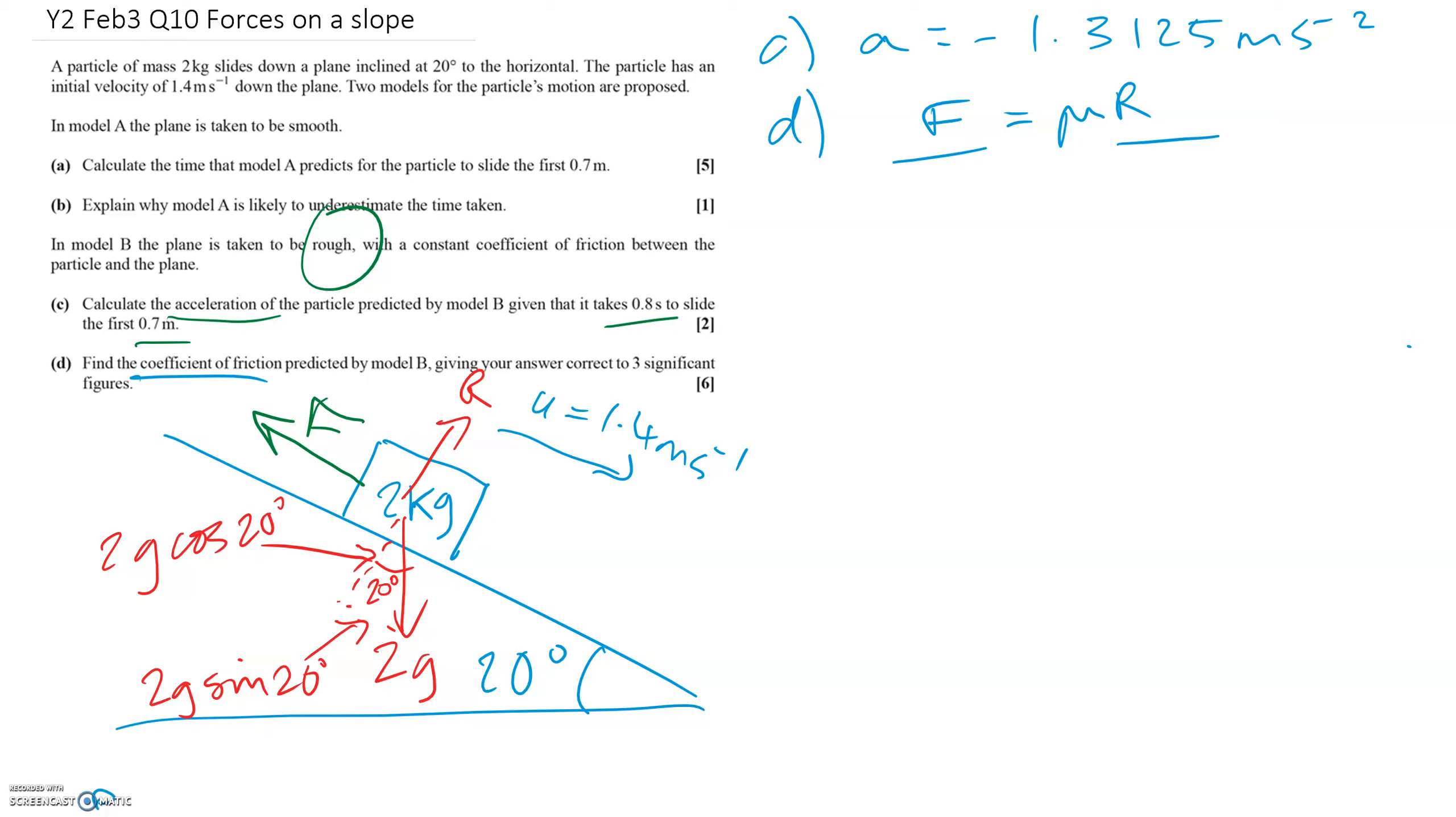So let's find F first. If we resolve down the slope, we do resultant force equals ma. So if we resolve in this direction, all the forces going down the slope, 2g sin 20. We've also got the frictional force now in the opposite direction. And that will equal the mass times by the acceleration we got in part C minus 1.3125. So rearranging that, getting F on its own, I'll get F equals 9.32859. And probably best to keep that exact on your calculator because we're going to need it later on when we use this formula.